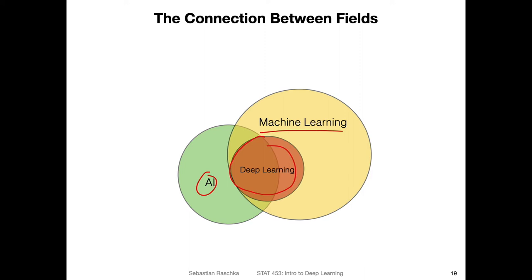Looking at the diagram, there are also AI methods that don't use machine learning. There is something called 'good old fashioned AI' that doesn't always involve machine learning. So let me go through these things step by step.